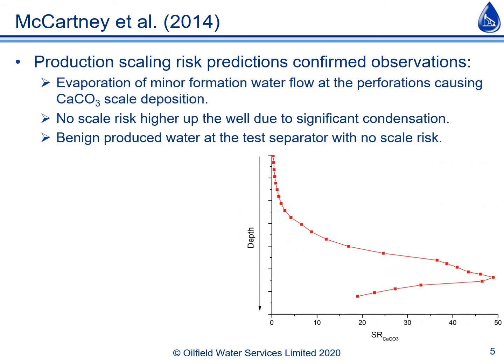The formation water rates and composition were then used in production scaling risk predictions. These demonstrated that calcium carbonate scale was expected to deposit across the perforations of Formation 1, exactly as was being observed. The deposition was being caused by production of a small amount of formation water which was being partially evaporated as it entered the well via the perforations. Higher up the well, condensation was occurring which caused the formation water to be significantly diluted, so there was no scale risk higher up in the well nor in the test separator.